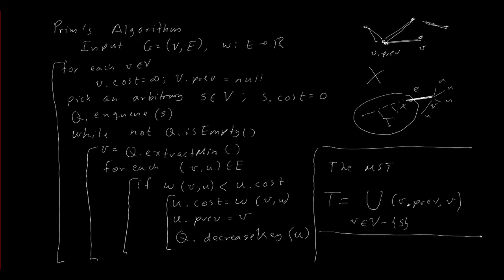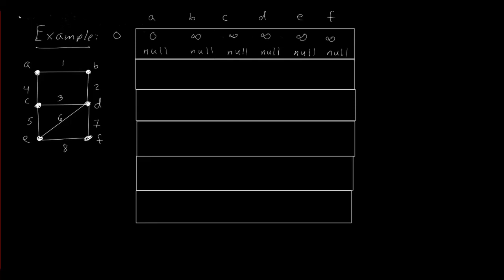The analysis is similar to Dijkstra's with no difference. The only difference from Dijkstra's is how we update the cost — here we just use the edge weight, whereas Dijkstra's adds the current distance. The running time of Prim's algorithm is exactly the same as Dijkstra's: O((V + E) log V). Let's quickly go through an example of Prim's algorithm using this graph.